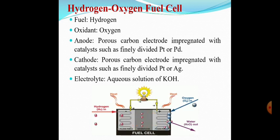The cell consists of a porous carbon electrode mixed with a catalyst such as finely divided platinum or palladium as the anode. The cathode is also a porous carbon electrode with platinum or silver as a catalyst.